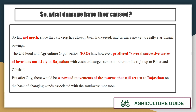So what damage have they caused so far? Not much damage so far because the rabi crop has already been harvested and farmers are yet to start the kharif sowing. According to FAO, the swarm colonies will return to Rajasthan because it is their breeding ground. If not controlled, they will attack the kharif crop.